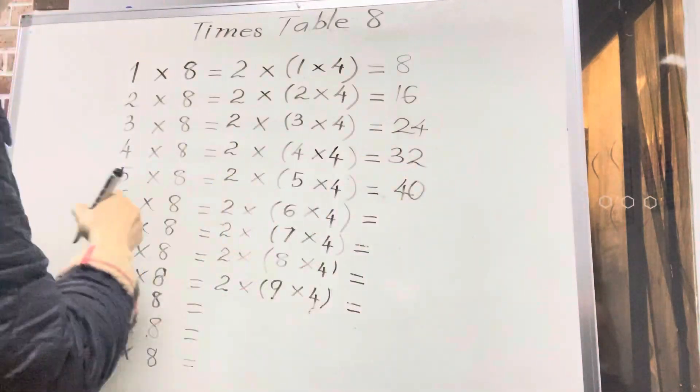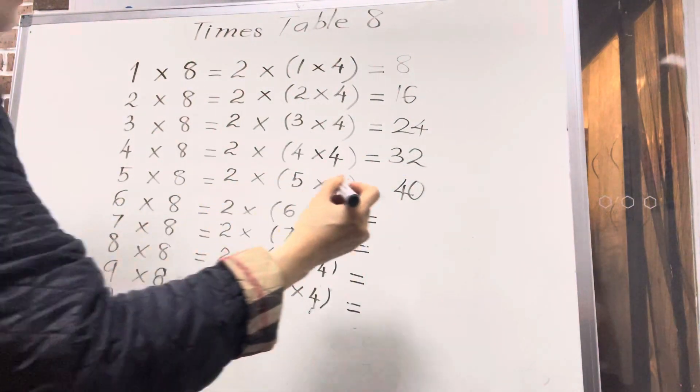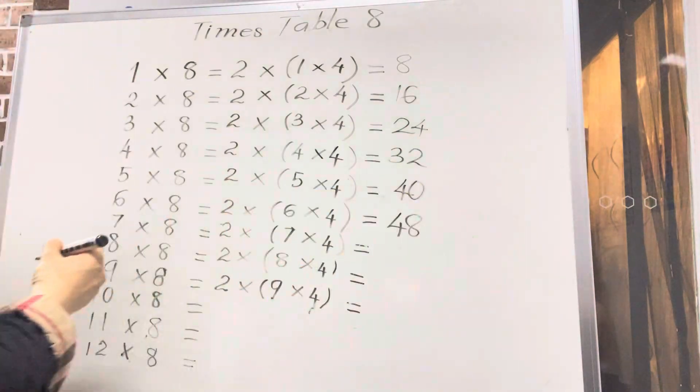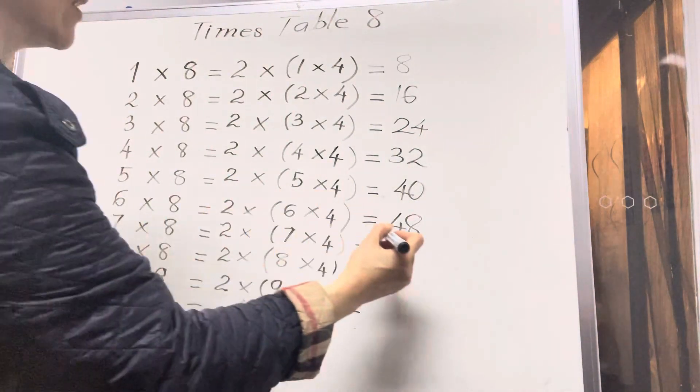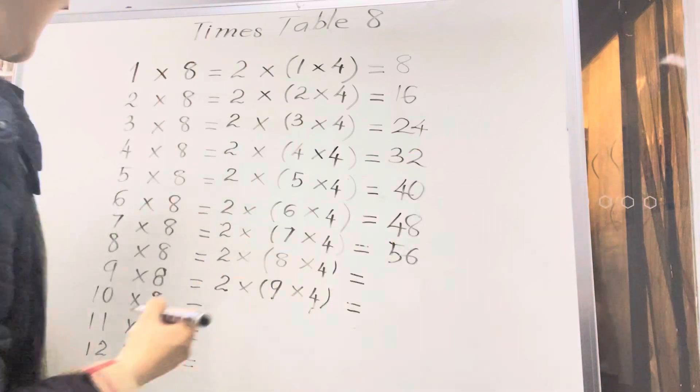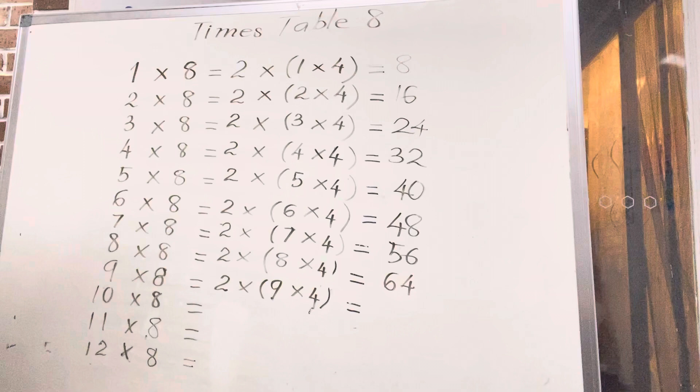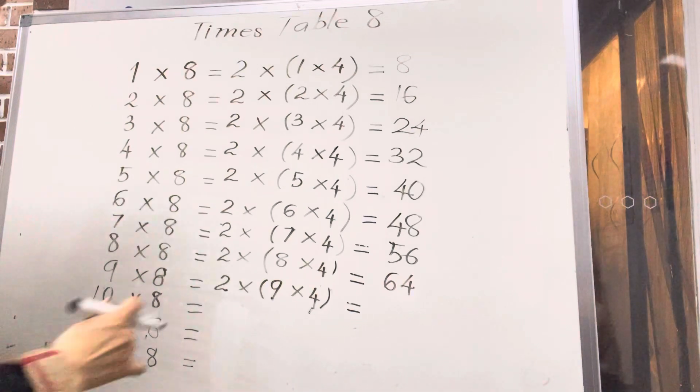Six times eight, forty-eight. Very good. Seven times eight, fifty-six. Eight times eight, sixty-four. Very good, sixty-four. Nine times eight, seventy-two.